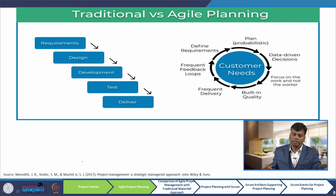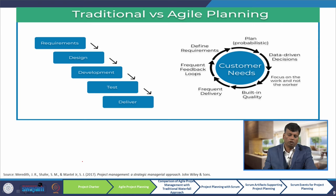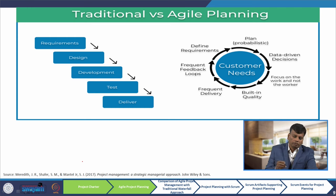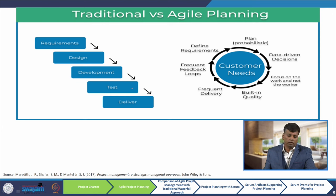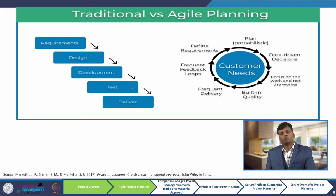Here is a comparison between traditional and agile planning. On the left-hand side, the waterfall approach: first we get requirements from the user, then design the project, then develop, then test and deliver — there is no feedback system. But on the right-hand side, the customer need is at the center, then we go for probabilistic planning, take data-driven decisions, focus on work and not the worker, ensure built-in quality, frequent delivery, and frequent feedback loops, then redefine requirements.